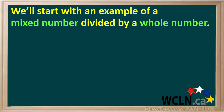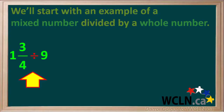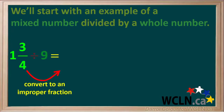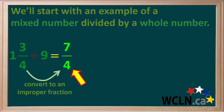Let's start with an example of a mixed number divided by a whole number. Here we have the mixed number 1 and 3 quarters divided by the whole number 9. We start by converting the mixed number 1 and 3 quarters to an improper fraction. The denominator is 4, and the numerator is 1 times 4 plus 3, which is equal to 7. So our improper fraction is 7 over 4.